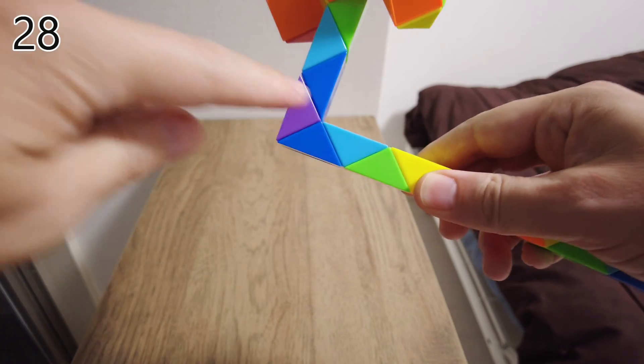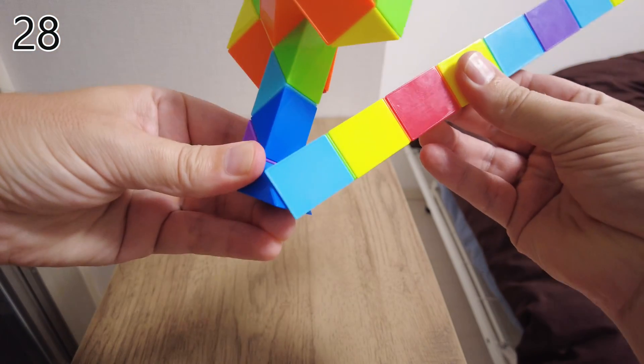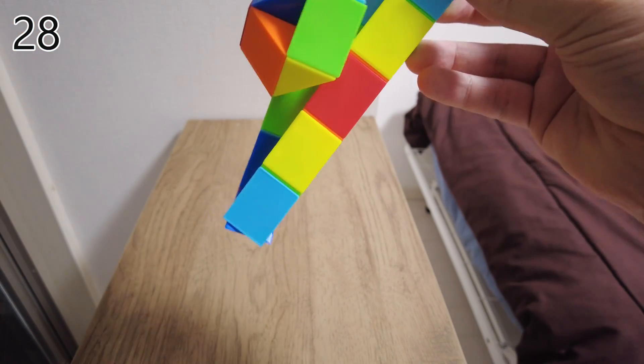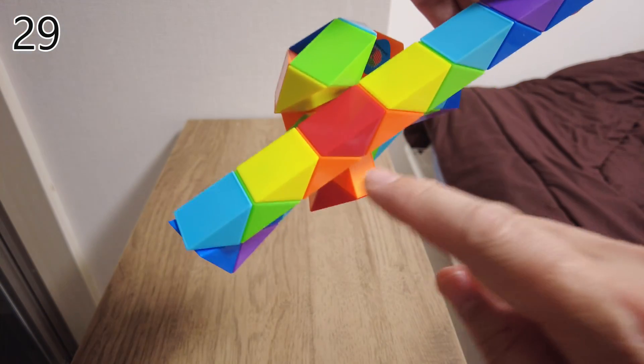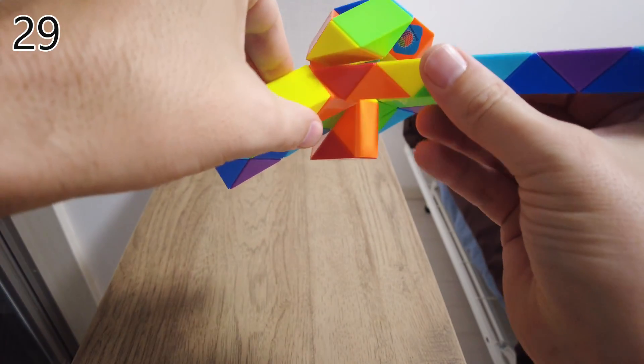Now, at this join, the arm kind of goes back on itself, but it can't properly, because this is in the way. So we bend it here towards us, like that.